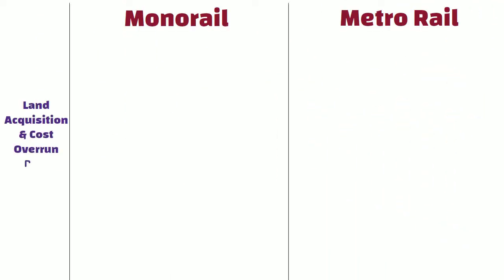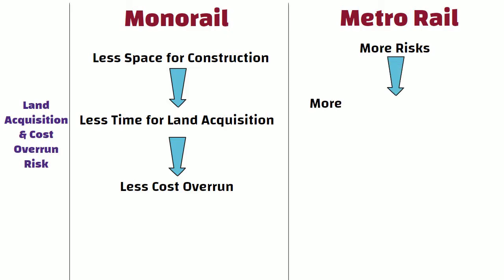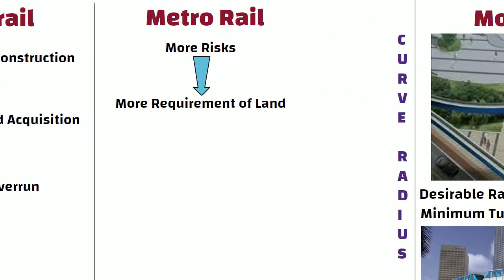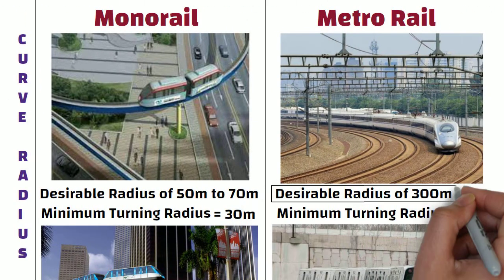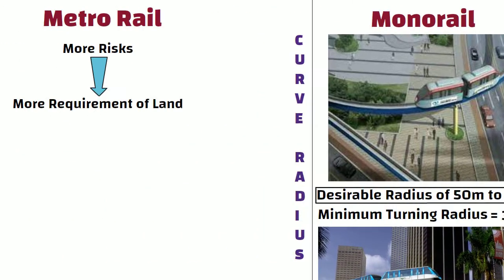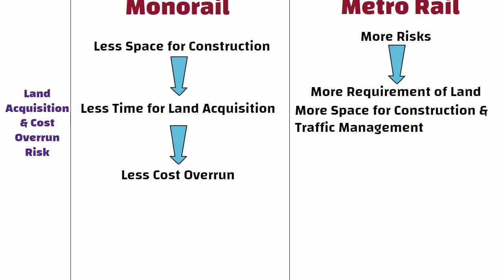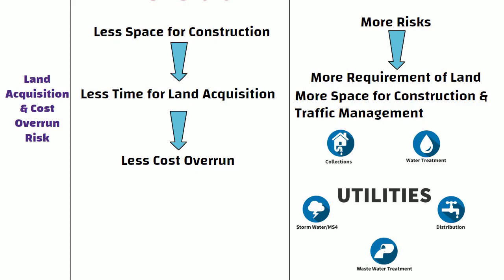Land acquisition and cost overrun risk. Monorail requires less space for construction, hence it requires less time for land acquisition, and due to this, the possibility of cost overrun is also less. Whereas metrorail faces more risks than monorail due to greater land requirements — specially because metrorail requires a desirable radius of 300 meters compared to monorail's 50 to 70 meters. It requires more space for construction and traffic management, and shifting of utilities could also aggravate further problems.